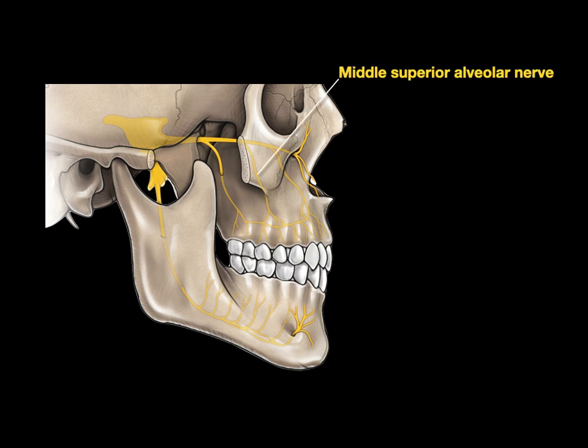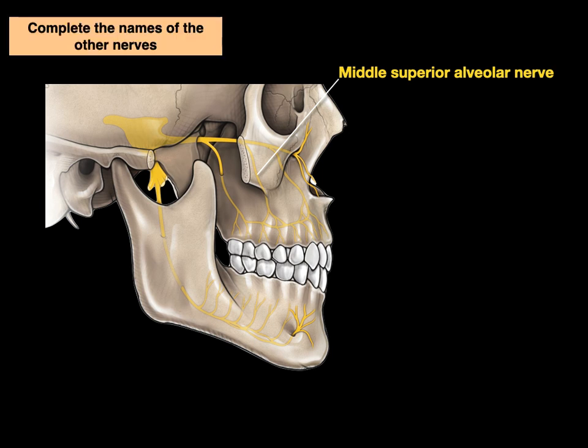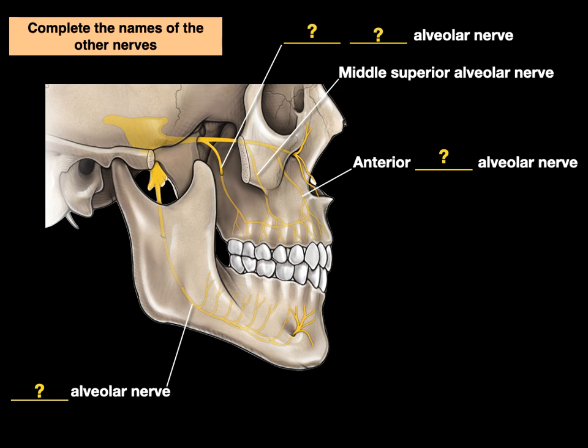How about this one? That is called the middle superior alveolar nerve. Complete the names of the other nerves based upon what we know from directional terms. This one is called the anterior something alveolar nerve. Because the other one is called the middle superior alveolar nerve and this one is anterior — towards the front — we'll call it the anterior superior alveolar nerve.